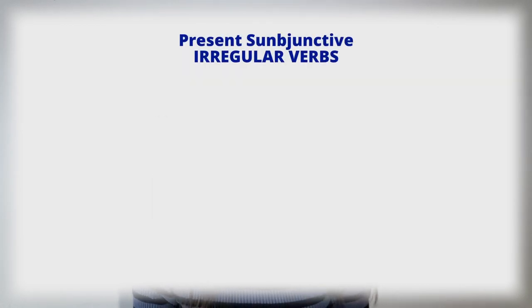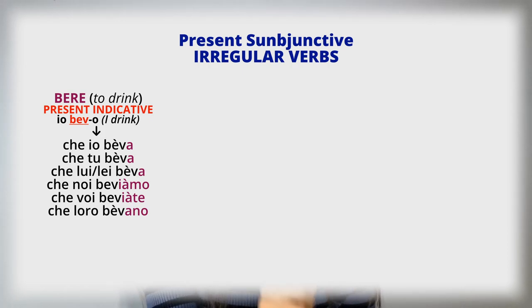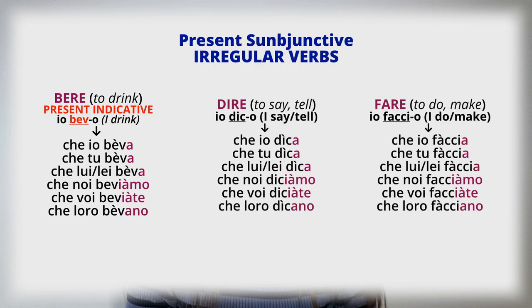As for irregular verbs, they take for all forms the root of the first person in the present indicative, and then they add the endings we saw before. For example, the verb 'bere' has the present indicative 'io bevo,' so the present subjunctive would be: che io beva, che tu beva, che lui beva, che noi beviamo, che voi bevete, che loro bevano. The same applies for all similar examples.